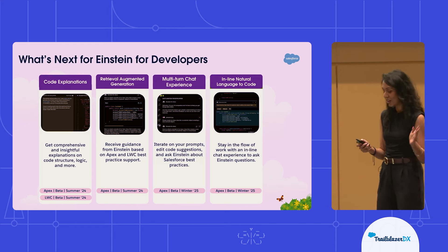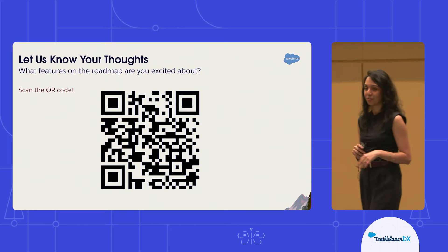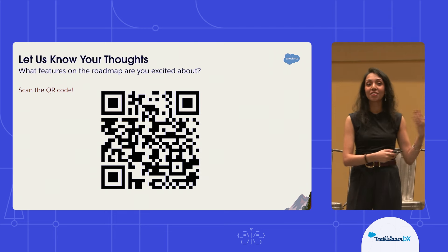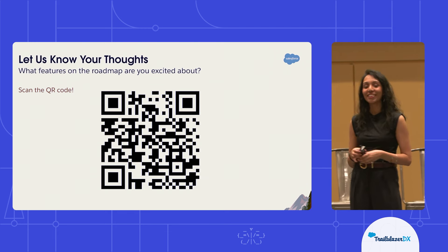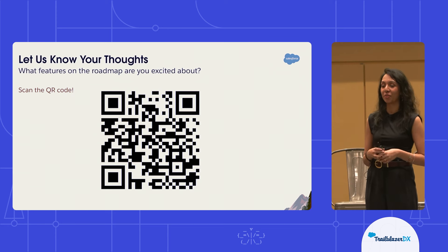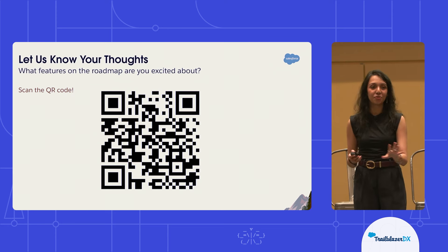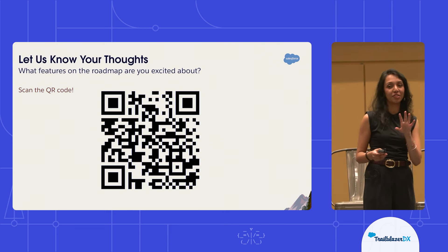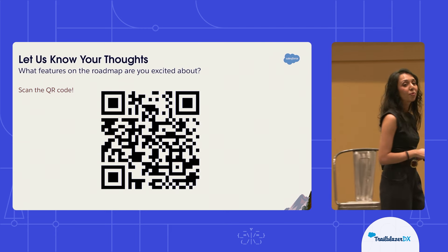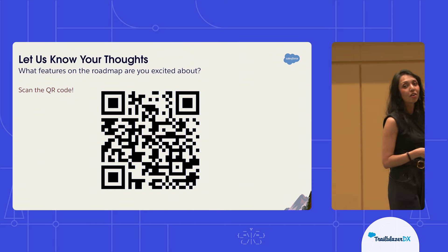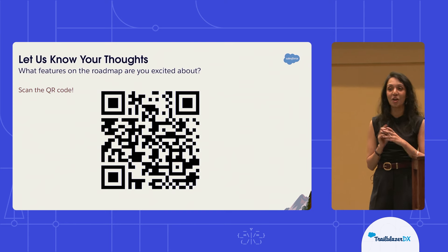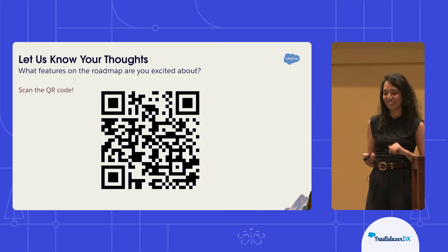If all this sounded really exciting for you, I want to take a moment to let you all scan a QR code where we want to get feedback from you all on our upcoming roadmap. Please take a moment to scan this and fill out our Google form where we are looking to get some more feedback on our upcoming priorities. This is your chance to help make sure that we're solving your pain points.